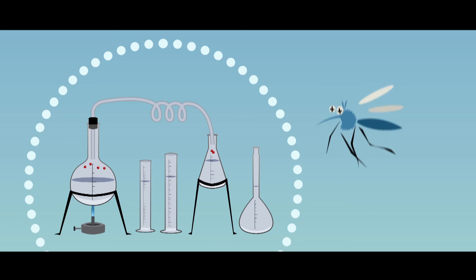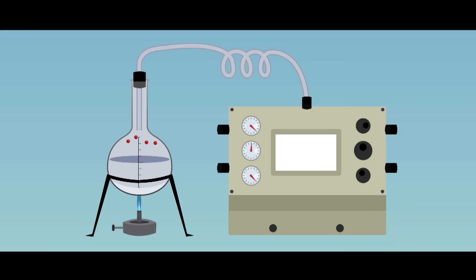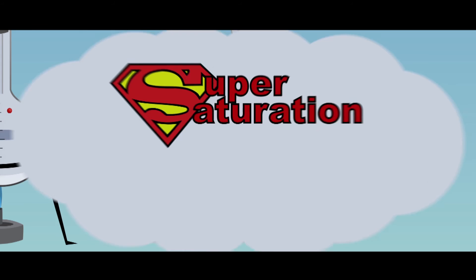For our experiments, we need a source of vapor and a measurement chamber. There, we can manipulate the conditions so that the vapor prefers to transit to the condensed phase. We call it a supersaturated vapor.